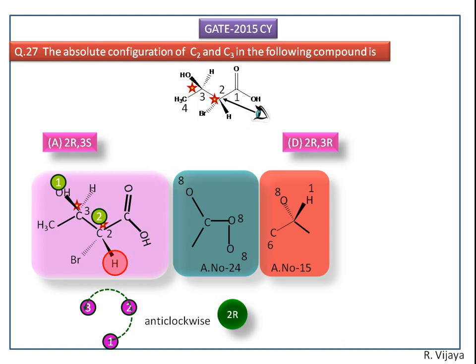Comparing these two, the right side carbon atom has the higher priority than the left side carbon atom. Now this priority rotates in a clockwise direction, so the configuration is supposed to be 3R. Here the least priority is backward to the observer, so we need not change the configuration. The configuration is 3R.